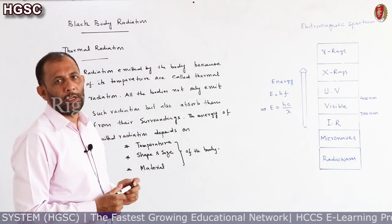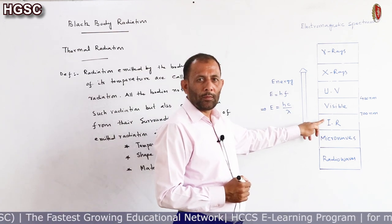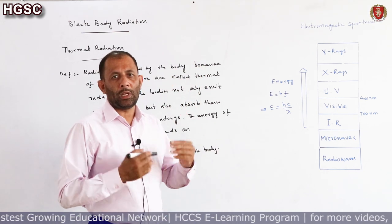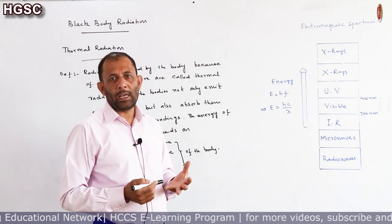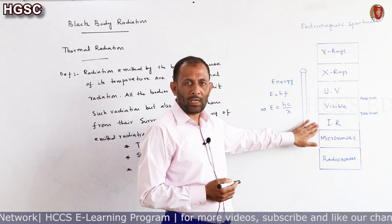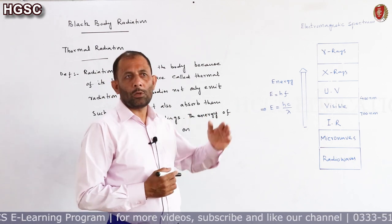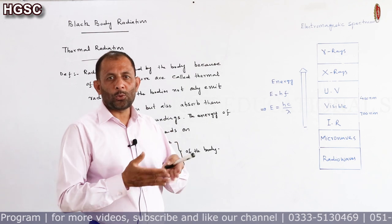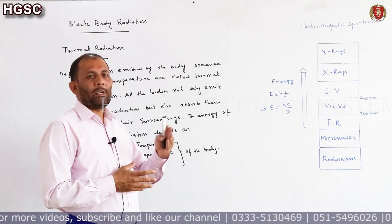At low temperature, a body emits radiation of longer wavelength in the infrared region of the electromagnetic spectrum, which is invisible. The human body has a normal temperature of about 310 Kelvin (37°C), so radiations from our body are of longer wavelength in the infrared region and we cannot see them. Similarly, the walls at room temperature also emit radiation in the invisible infrared region.